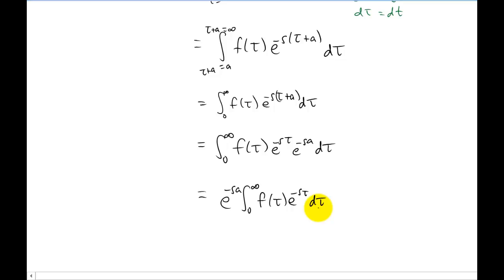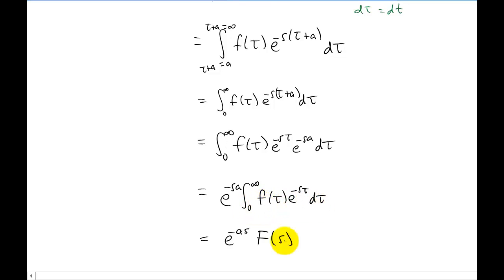And this integral that remains is just a Laplace transform of little f. So our notation tells us that we can write the Laplace transform of little f as capital F of s. I just reversed the a and the s in the exponent here to make it look nicer. And what we've learned is something new that we can stick inside of our Laplace transform table.